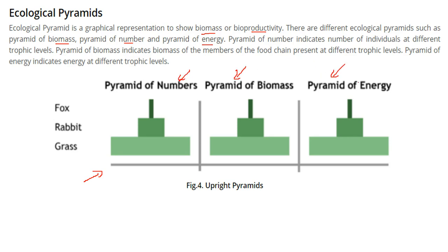The pyramid of number indicates the number of individuals at different trophic levels — how many individuals are present. The pyramid of biomass indicates the biomass of members of the food chain at different trophic levels.